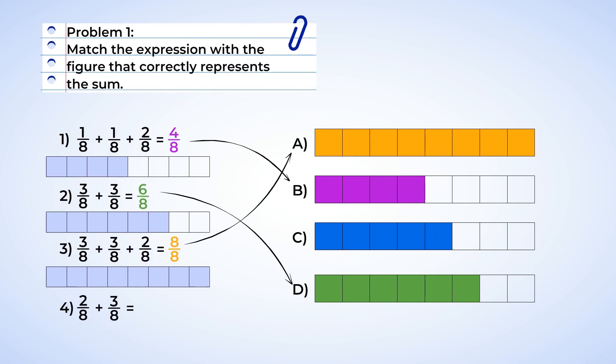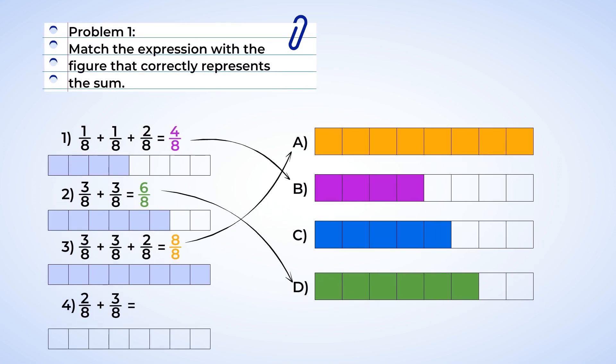And last one now. Two-eighths plus three-eighths — should be easy enough. Shade in two sections and then three more sections, and that gives us five sections. And that matches with letter C.